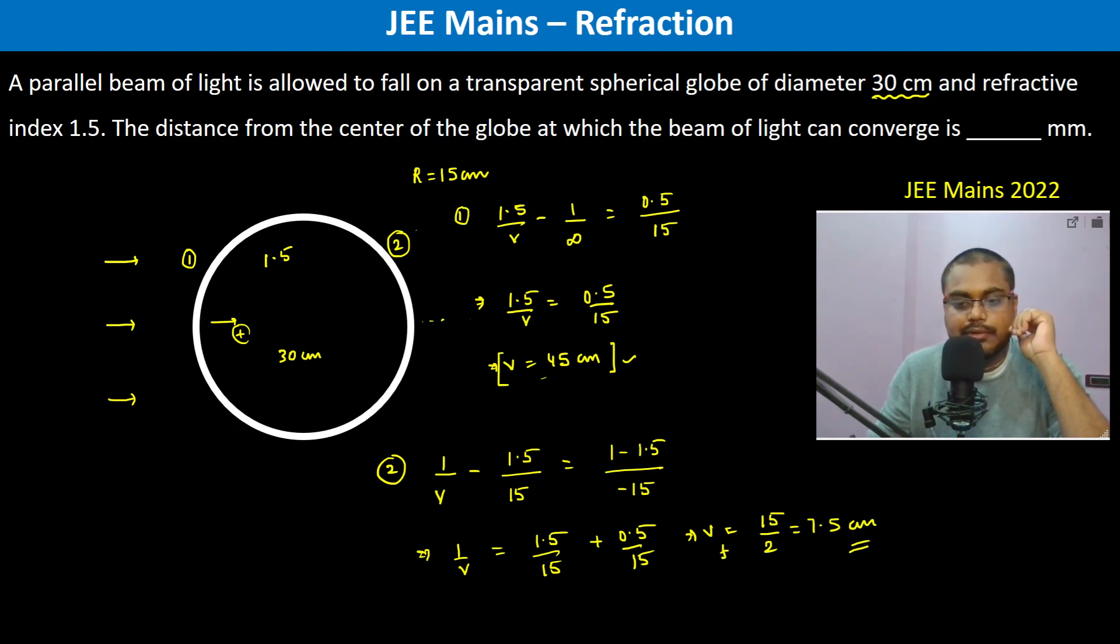This is the final v, 7.5 centimeter from here it will converge ahead. Therefore, distance from the center of the globe is 15 plus 7.5 which is equal to 22.5 centimeter, or in millimeters it becomes 225. Thank you.